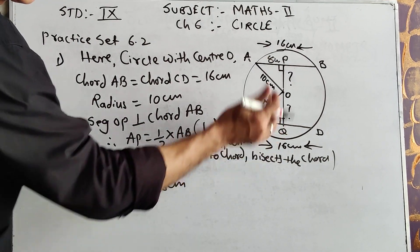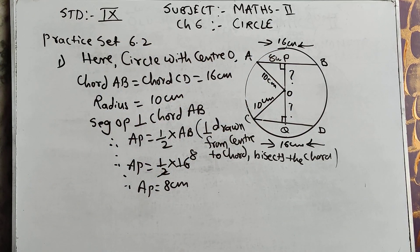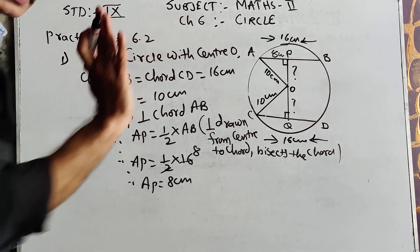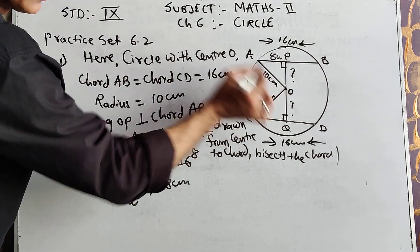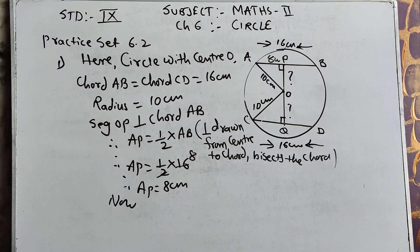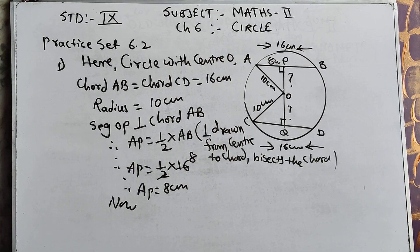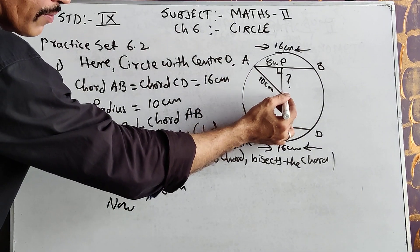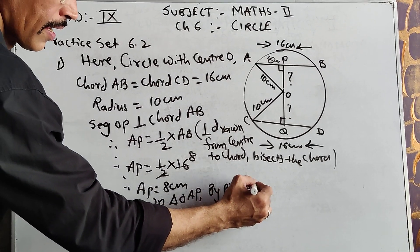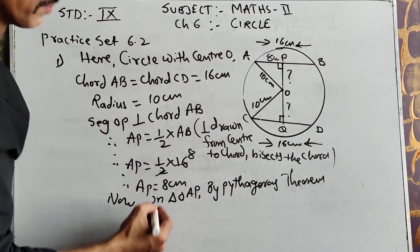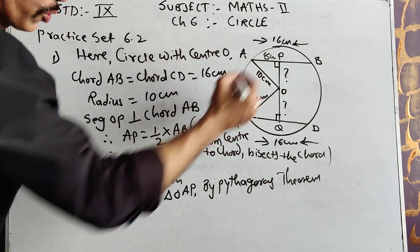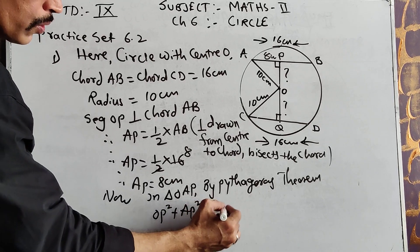There is no need to use both parts; only one part is enough. You got AP as 8 and the radius OA as 10, and now we want OP. We will take the help of the Pythagoras theorem. In triangle OAP, by Pythagoras theorem, since this angle is 90 degrees and the side opposite to 90 degrees is your hypotenuse, I am writing: OP² + AP² = OA².